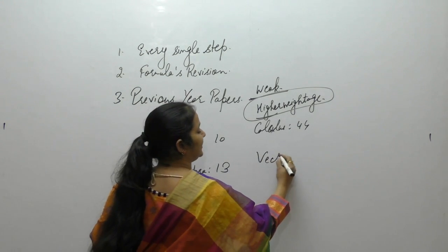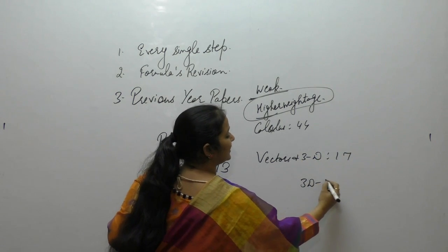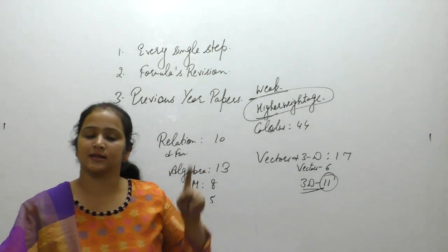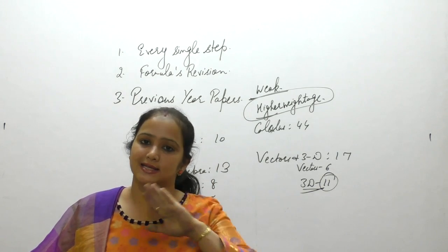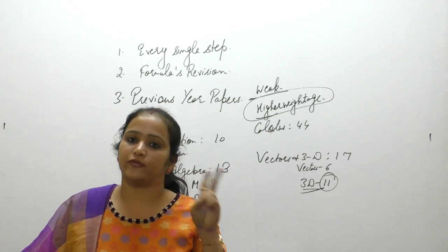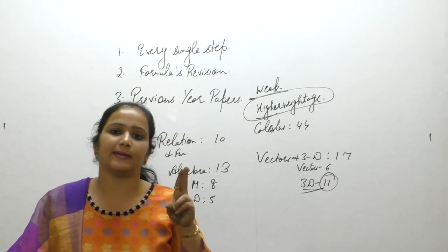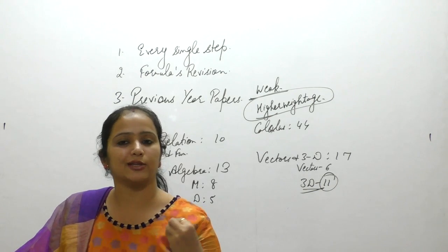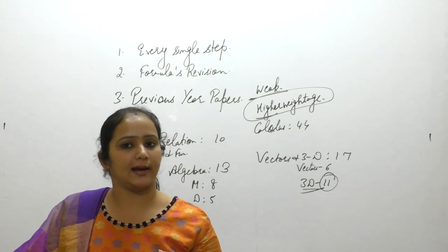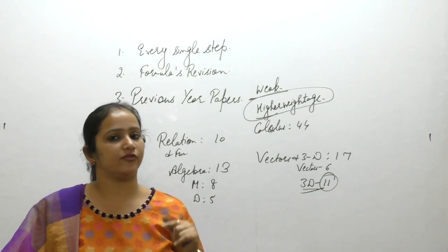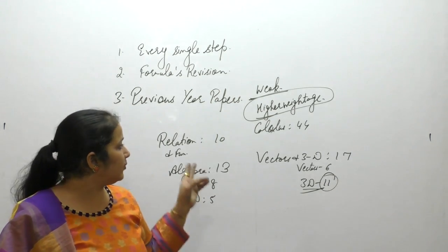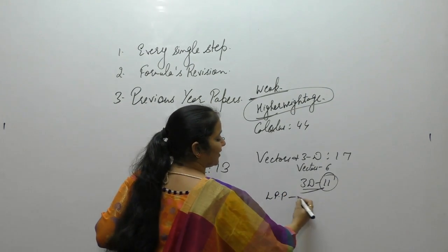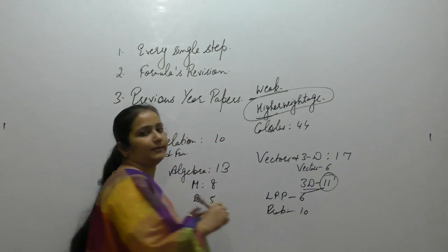Vectors and 3D: 3D chapter carries 11 marks, Vectors carries 6 marks. So first prepare Integration — if your integration is solid, Application of Integration and Differential Equations will be covered quickly. After those three chapters, do Vectors and 3D. The difficult Section C topics will be finished. Then LPP and Probability — complete the second book first since it is more difficult and carries more marks. LPP is 6 marks and Probability is 10 marks.